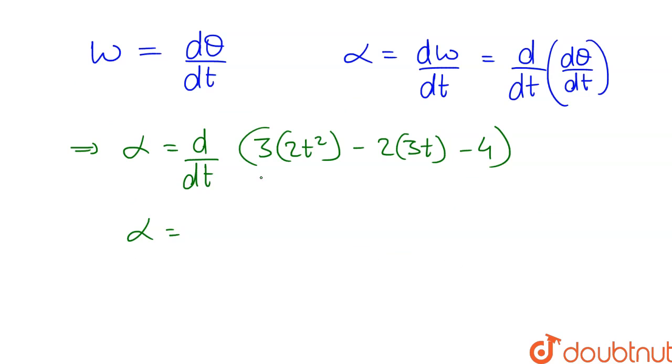Further alpha will be equal to 3 into 2 into 2 into t minus 2 into 3 minus 0.